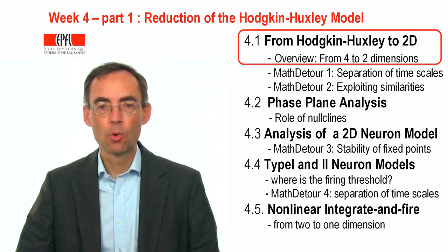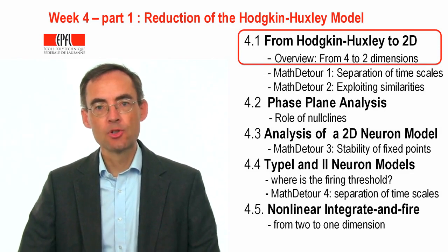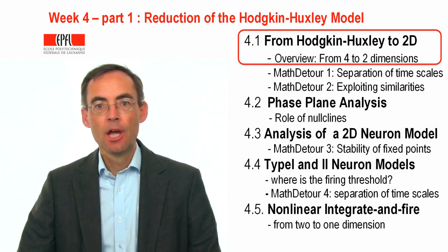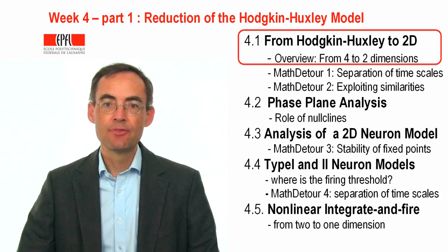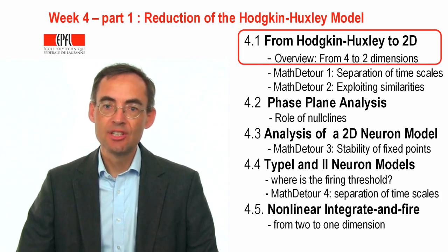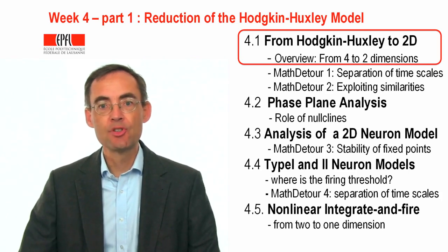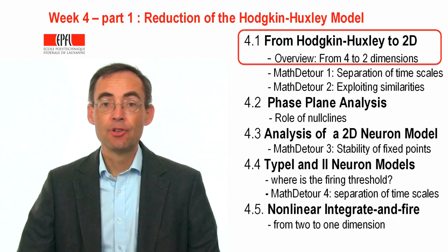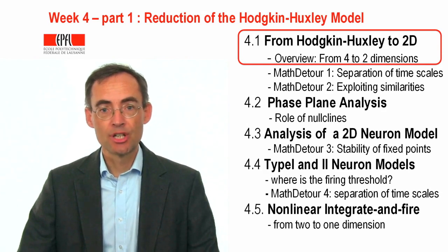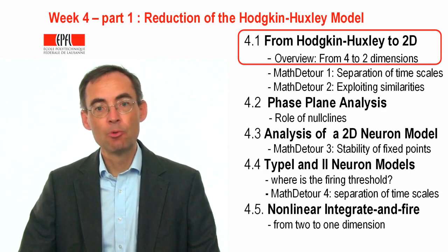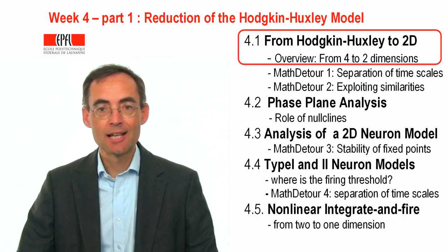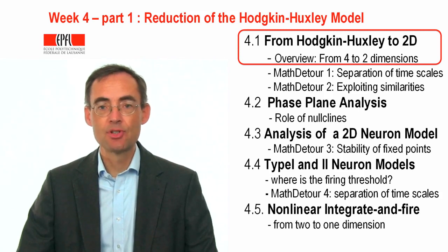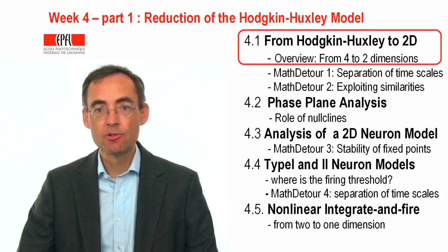Welcome to week four of the class Neural Dynamics. In the previous two weeks, we have developed rather detailed biophysical neuron models. We started off with models of the Hodgkin-Huxley type with different ion channels. Last week, we added synapses and added dendrites.